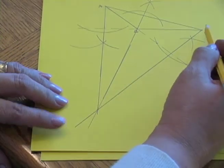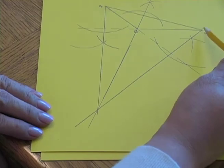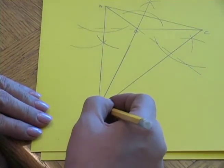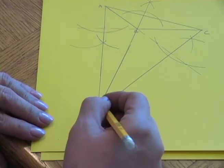And what I see is that it does work. So the altitude from C to the line that contains AB goes through the point of intersection of the other two altitudes.